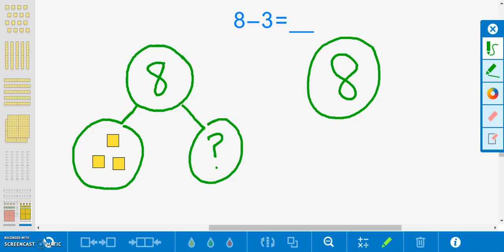In one part of the whole, I will write the number three to represent the three starbursts that Ava has. In the other part of the whole, I will represent the number of M&Ms Ava has with a question mark. The number of M&Ms will be the solution to the subtraction word problem.